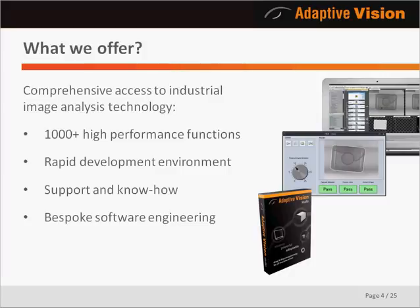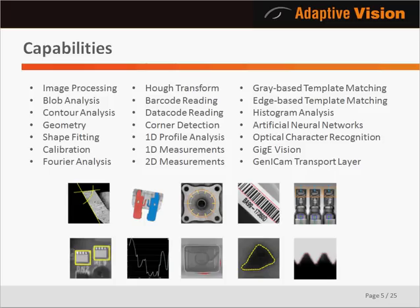I'm starting with the general overview of what we offer on the machine vision market. We provide comprehensive access to industrial image analysis technology, including a comprehensive library of image analysis functions, a rapid development environment for machine vision engineers, and technical support and assistance in choosing the right algorithms for your projects. We also develop bespoke projects for customers who prefer to outsource the complete software engineering. In short, you get the complete range of products and services related to machine vision software, encompassing both general image processing and computer vision tools, as well as ready-made tools for typical industrial applications like template matching, measurements, or barcode readers.